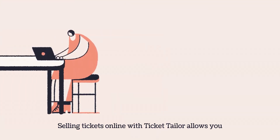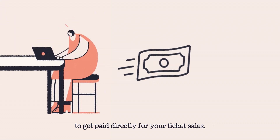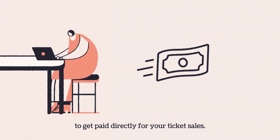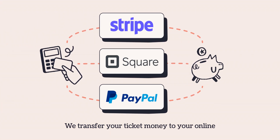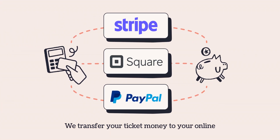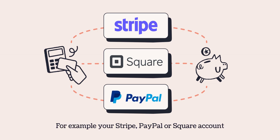Selling tickets online with TicketTaylor allows you to get paid directly for your ticket sales. Ticket funds never touch our bank account. We transfer your ticket money to your online payment processing account — for example your Stripe, PayPal or Square account — directly after a ticket is purchased.